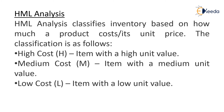The classification in HML analysis is as follows: High cost, where an item with a high unit value is classified; Medium cost, where an item with a medium unit value is placed; and Low cost, where an item with a low unit value is placed.